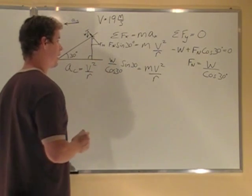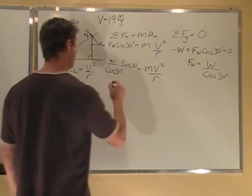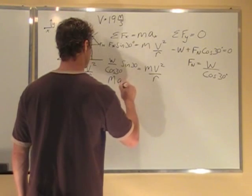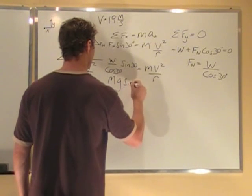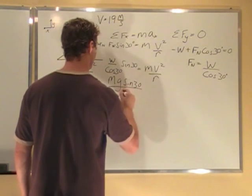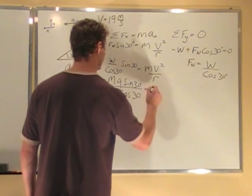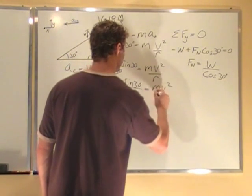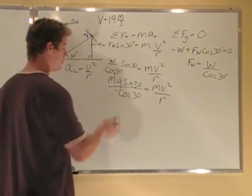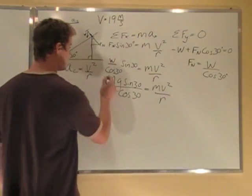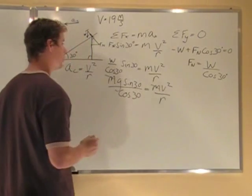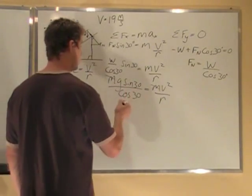Now I know W is equal to mg, so I'm going to plug that in. So I get mg sine 30 over cos 30 equals m v squared over r. The m's are common on both sides, so they can be cancelled out. I'm left with g sine 30 over cos 30.